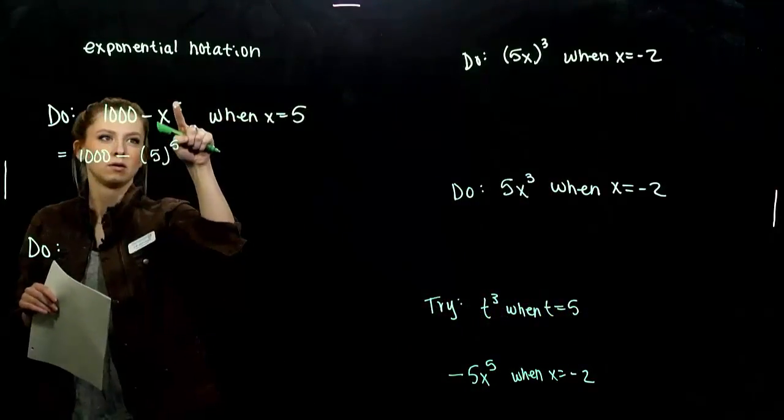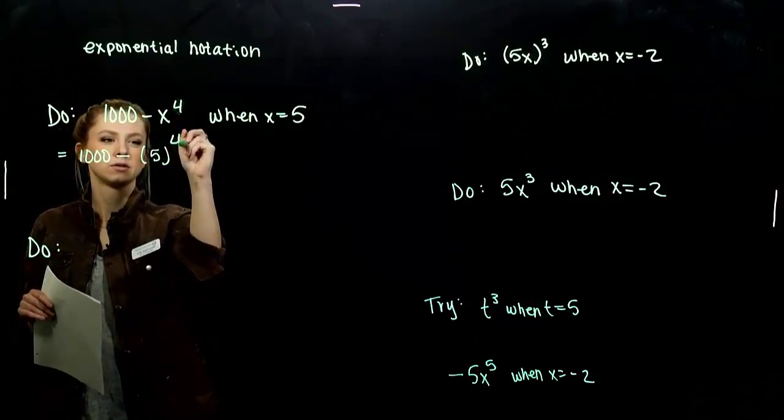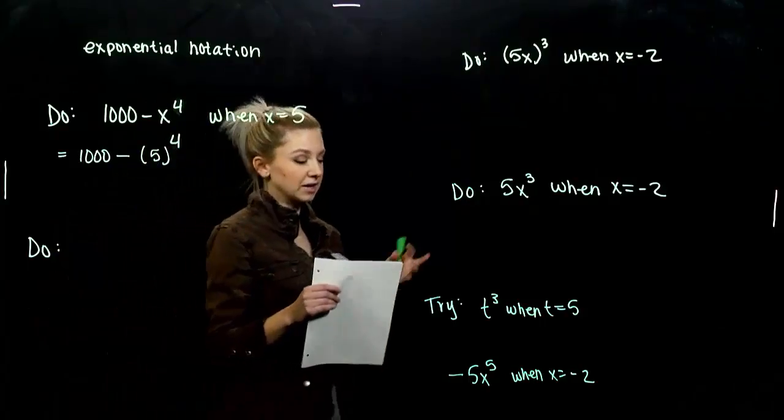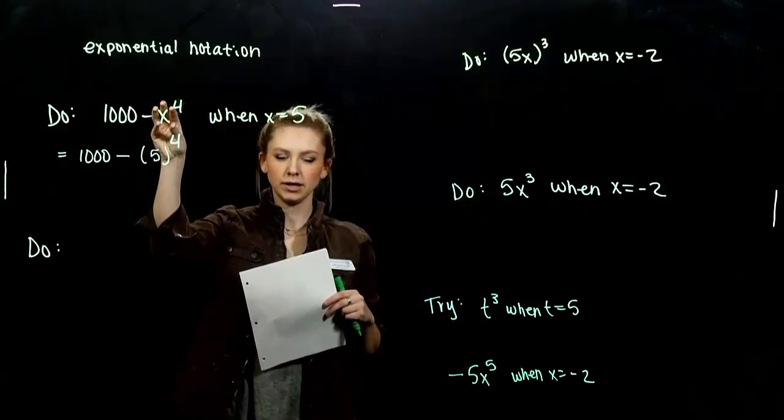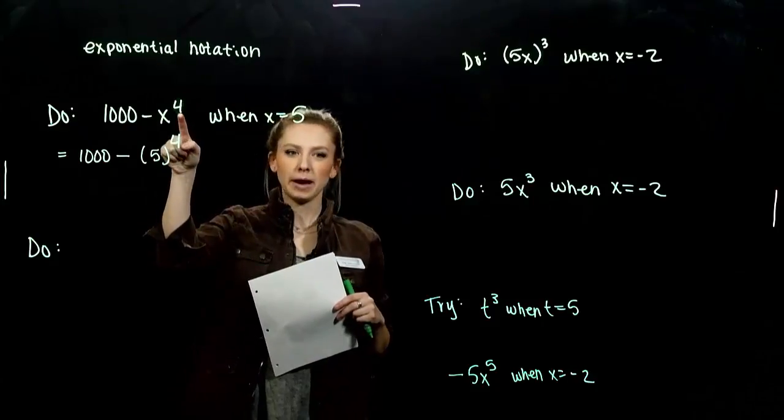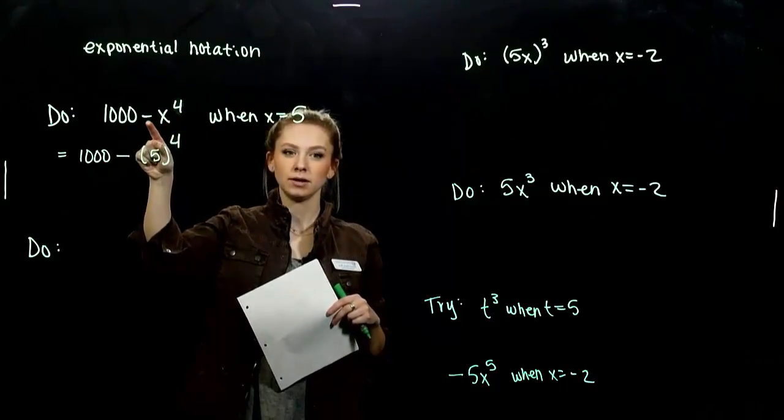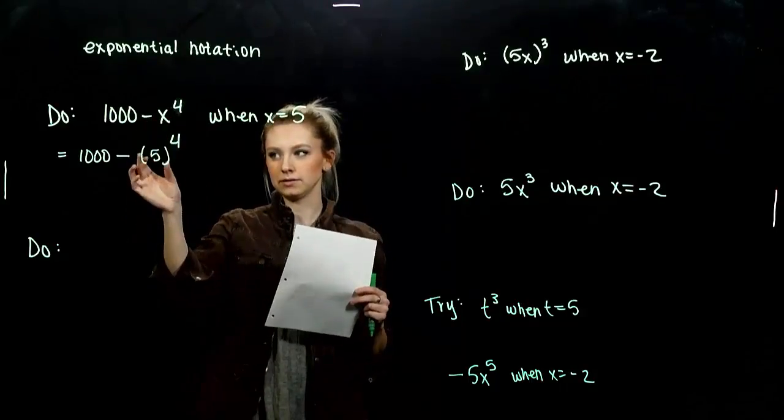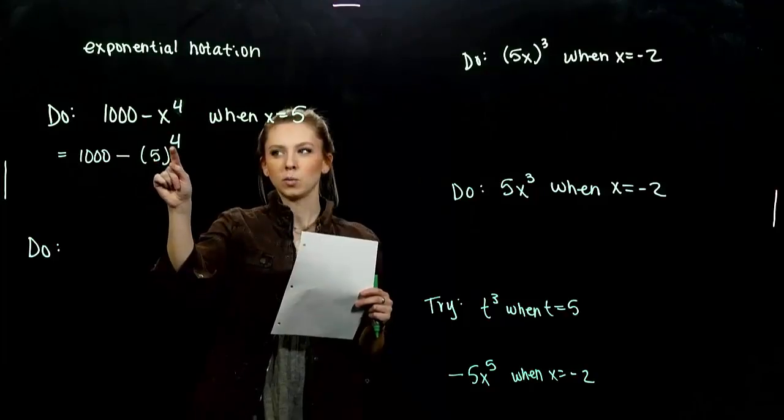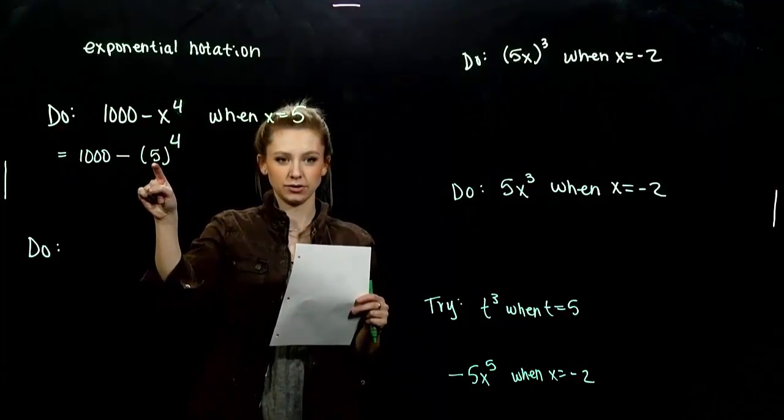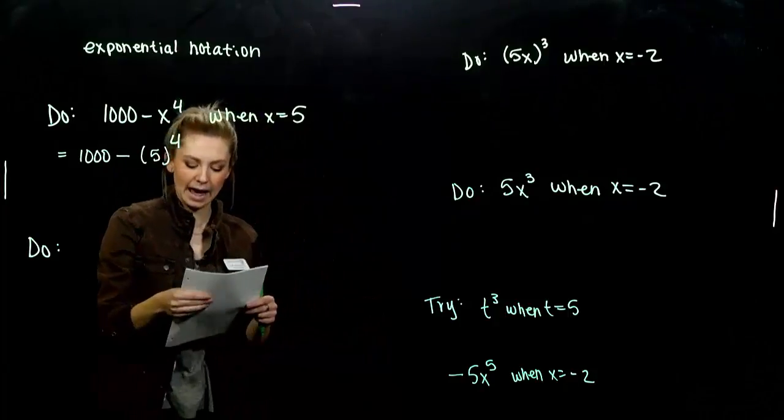It's to the fourth. Now, we should all match. x to the fourth. Again, wherever x is, put parentheses around it, because the power is only attached to x. It's not also attached to that negative, because it's not included in parentheses. Wherever x is, I like to put parentheses so I don't mistake what is my power actually attached to. Just to the 5, not also to the negative.